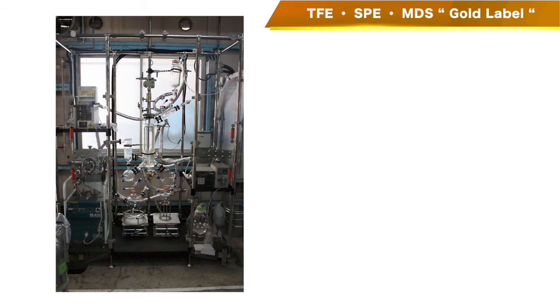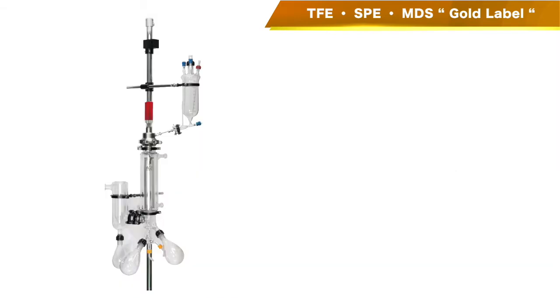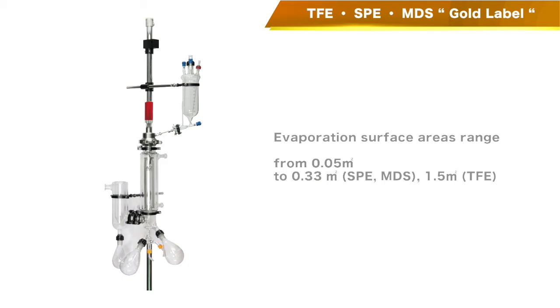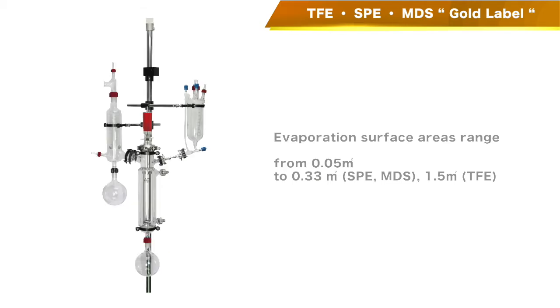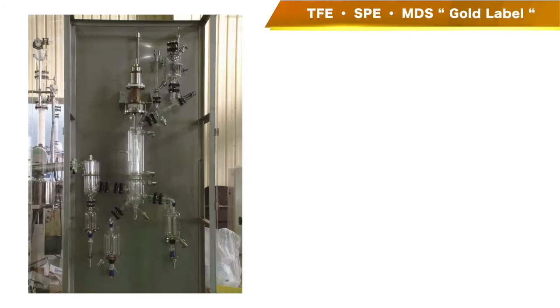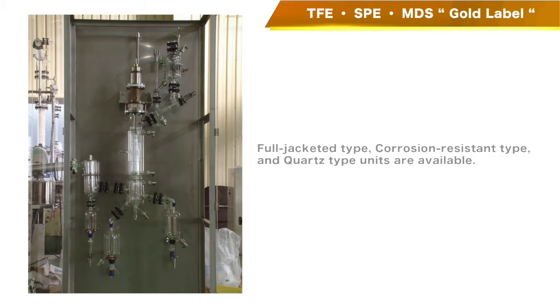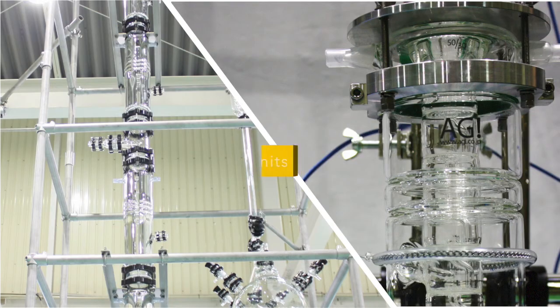These units may have evaporation surface areas ranging from 0.05 m2 to production scale 1.5 m2 size. Full-jacketed type, corrosion-resistant type and quartz-type units are available. We can customize not only glass apparatus, but control units, assemblies, etc.